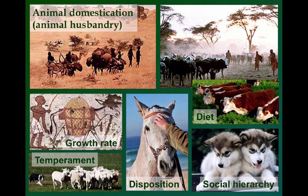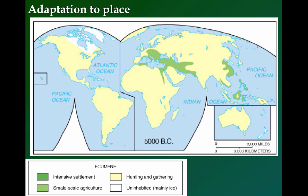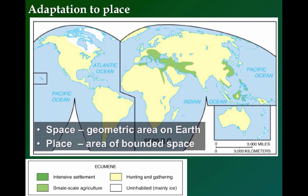Different societies advanced at varying speeds due to the constraints and advantages their spaces and places provided them. Space refers to the geometric surface or area on the Earth. Place, more specifically, is an area of bounded space, such as the Fertile Crescent. Because of its distinct plants and animals, it proved to be a place of unmatched advantage in the early Neolithic era. Due to the farming of plants and animals, the ecumen — the proportion of Earth's surface occupied by permanent human settlement — expanded substantially.